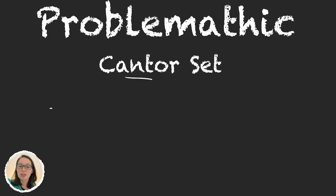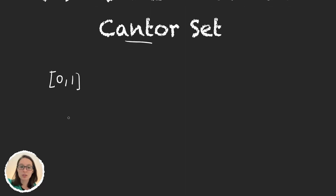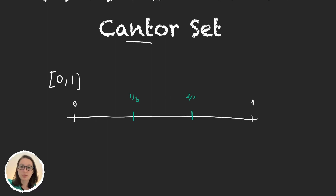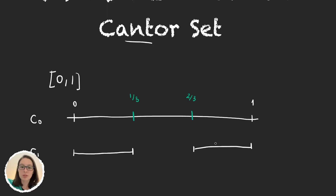The idea is to start with the interval [0, 1]. We have here the number zero and the number one. What we will do is divide this interval in thirds, so here we have one-third and two-thirds, and we will remove the third that is in the middle. This is stage zero in the construction. In stage one, we will have zero up to one-third and then from two-thirds up to one.